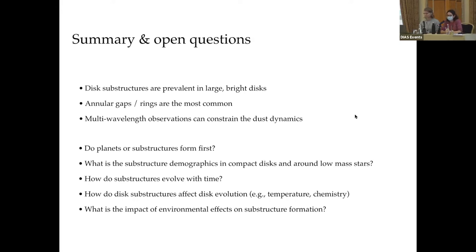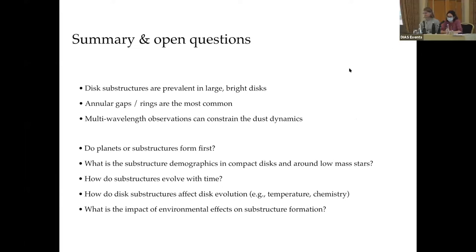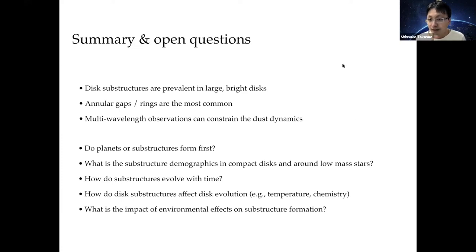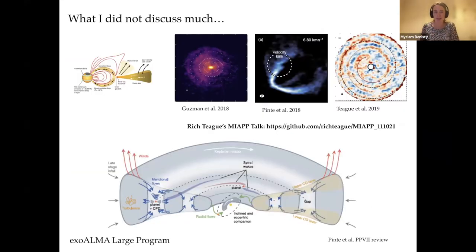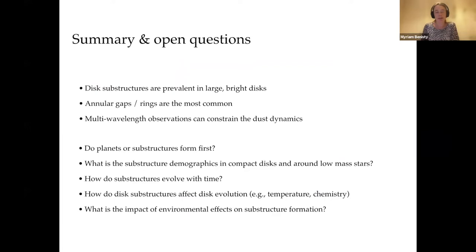There's a question on Zoom about the variable shadow: is the central star a dipper? Yes, the one that has the variable shadow going super fast is a dipper. The other one is a Herbig F star, so I don't think it has been qualified as a dipper — but the one that has the shadow that moves really fast and breaks into multiple shadows is indeed a dipper.